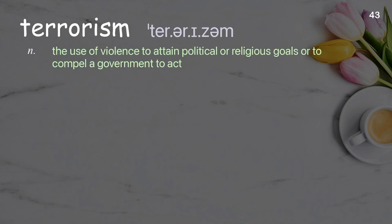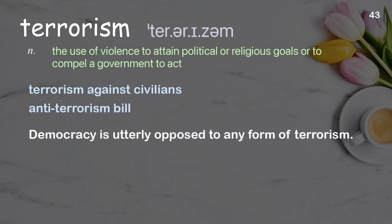Terrorism: the use of violence to attain political or religious goals or to compel a government to act. Examples: terrorism against civilians, anti-terrorism bill. Democracy is utterly opposed to any form of terrorism.